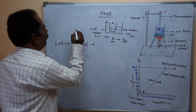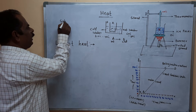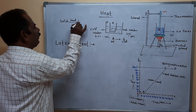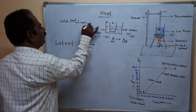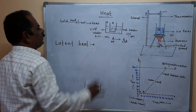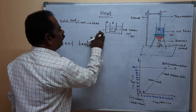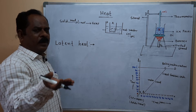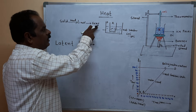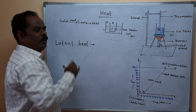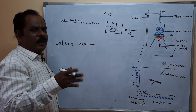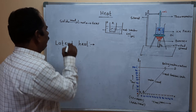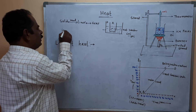Every matter occurs in three states: solid, liquid, and gaseous. After heating, solid forms a liquid; liquid is heated, it forms a gaseous state. When the temperature decreases, gas is converted into liquid; if the liquid is cooled, it is converted into solid. For example, ice is a solid form of water.